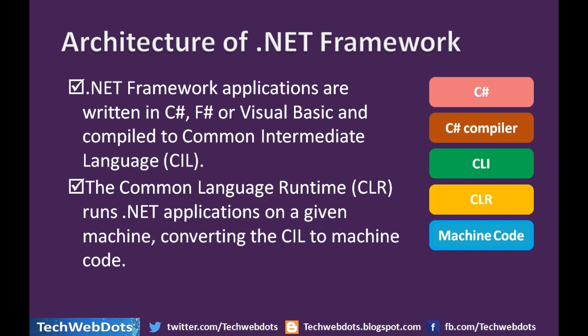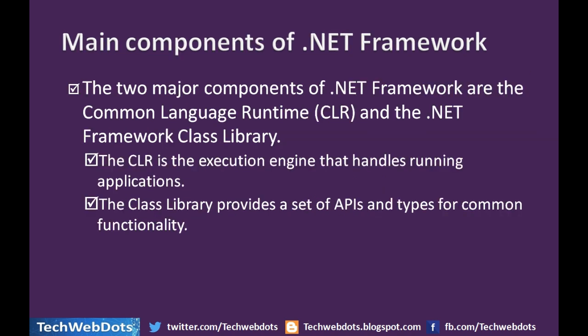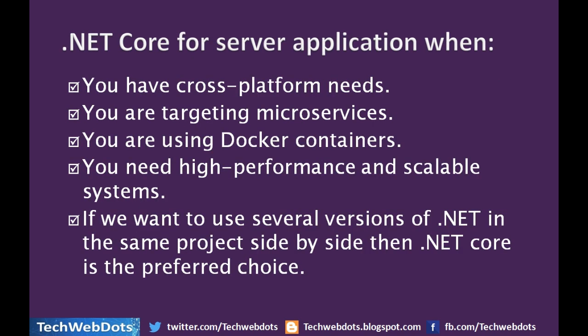On the right side you can see the few steps followed to run C# code: first, C# code is compiled by the compiler, then it goes to the Common Language Interface, then to the Common Language Runtime (CLR), which converts it to machine code understood by the system. The CLR runs the .NET application on a given machine by converting CIL to machine code. The main components of .NET Framework are the CLR, which is the execution engine that handles running applications, and the .NET Framework Class Library, which provides a set of APIs for common functionality.